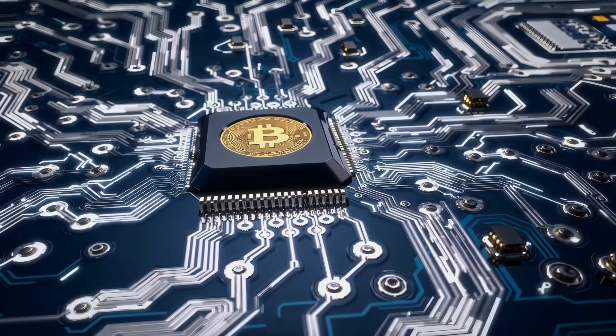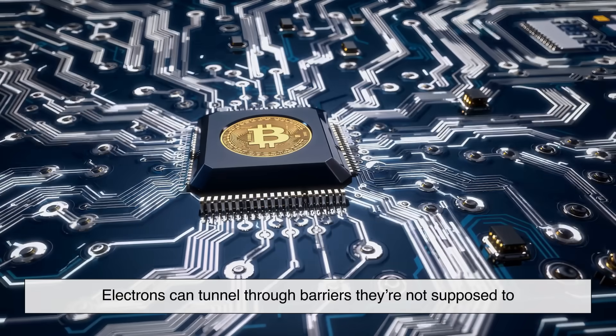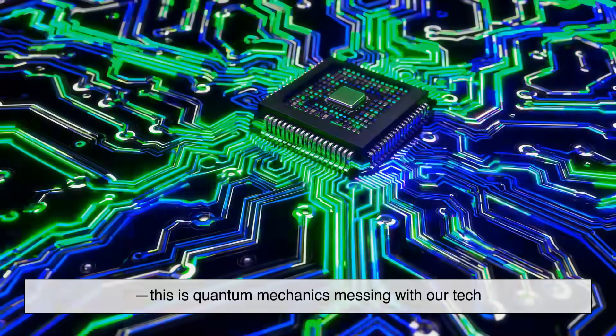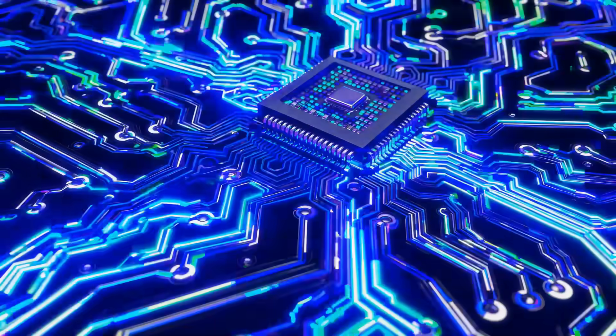At this level, traditional physics starts to break down. Electrons can tunnel through barriers they're not supposed to. This is quantum mechanics messing with our tech. So engineers have had to get creative.